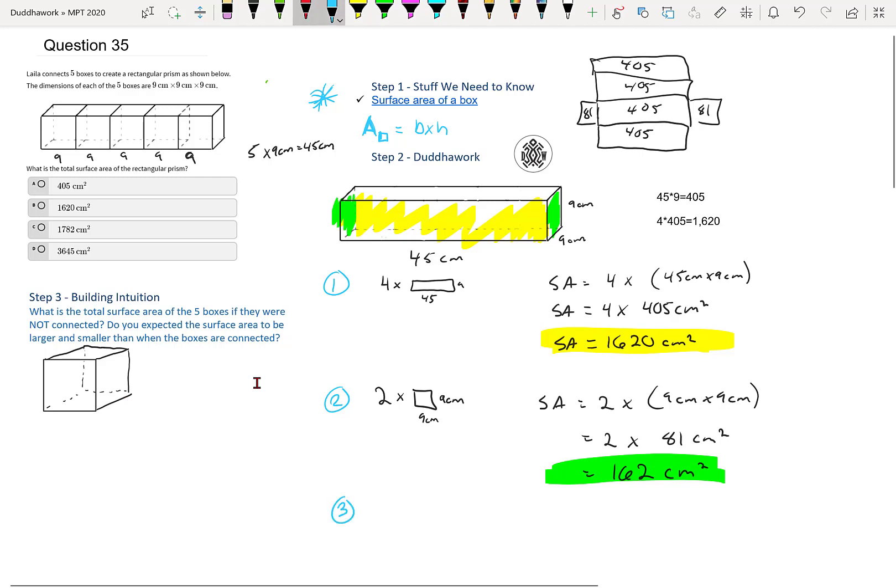So then the total surface area is equal to 1620 cm squared plus 162 cm squared. And if we do this in our head, that's 1782 cm squared. Is that one of the answers? Yes, it is, and we're done.